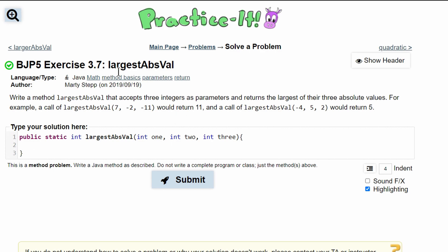For practice, Exercise 3.7: largest absolute values. We are to write a method largestAbsVal that accepts three integers as parameters and returns the largest of their three absolute values.